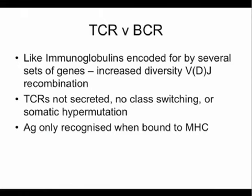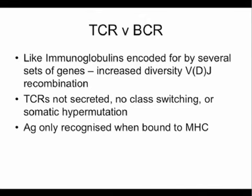The T cell receptor is similar to the B cell receptor — encoded by VDJ genes, with diversity created by rearrangement of those genes. However, unlike the B cell receptor, it's not secreted. It doesn't undergo class switch or somatic hypermutation. The VDJ diversity and recombination events are sufficient to generate enough T cell receptors to cover a good variety of possible epitopes. It also only recognizes antigen when it's presented by an MHC molecule, which is another key difference from the B cell receptor.